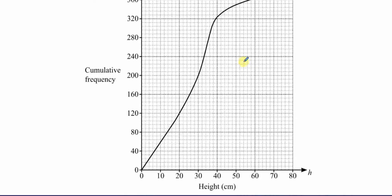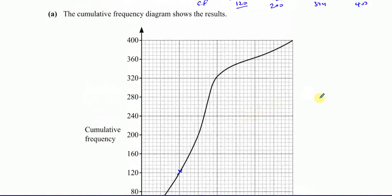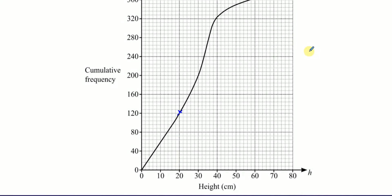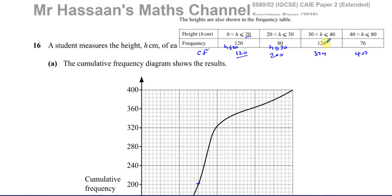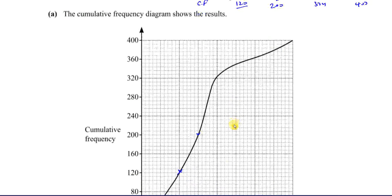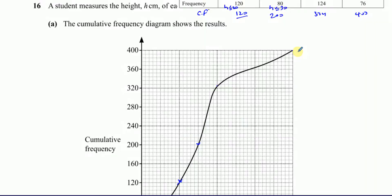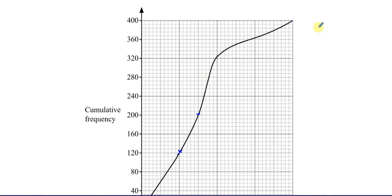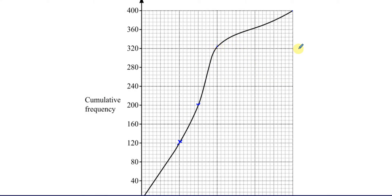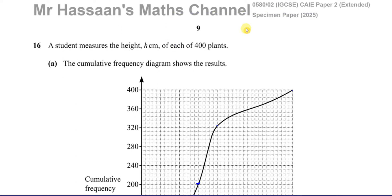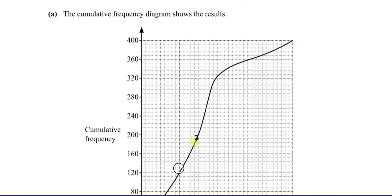The curve is made by plotting the cumulative frequency against the upper boundary — so 20 against 120, 30 against 200, and 40 against 324. You can see 30 against 200 right there on the graph, and 40 against 324 at that point. The last point is 80 against 400. That's just a little background to help you understand the topic better — we don't actually need it for part A.